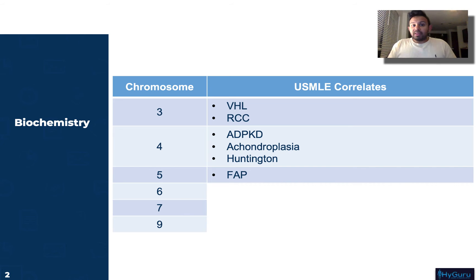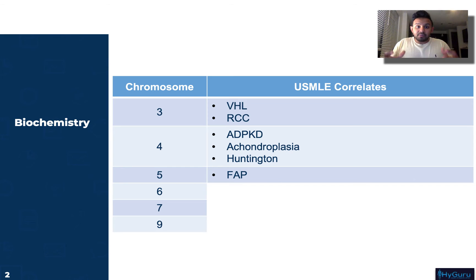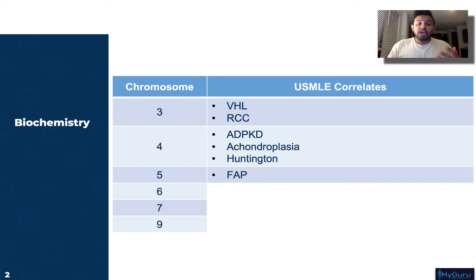Chromosome number five is related to familial adenomatous polyposis. This is going to be a mutation in the APC gene — FAP and APC. The typical presentation is a patient going for a colonoscopy where the GI specialist sees thousands of colonic polyps. These patients have a very high likelihood of developing colonic carcinoma, so management could be phrased on your exam as prophylactic colectomy.